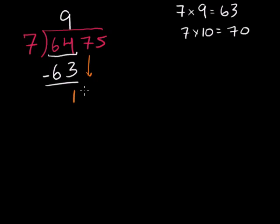Bring down the 7. Bring down the 7. 7 goes into 17 how many times? Well 7 times 2 is 14. And then 7 times 3 is 21. So 3 is too big. So 7 goes into 17 2 times. 2 times 7 is 14. 17 minus 14 is 3.